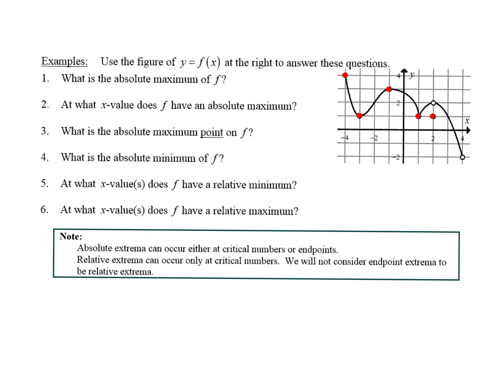Here's our first example: use the figure of Y equals F of X to answer these questions. What is the absolute maximum of F? It's 4 — the Y value there is 4. At what X value does this have an absolute maximum? Negative 4. So the absolute maximum point is (negative 4, 4). How about the absolute minimum? It doesn't have one, because it gets lower and lower but that's an open dot — we can't say exactly where it's at.